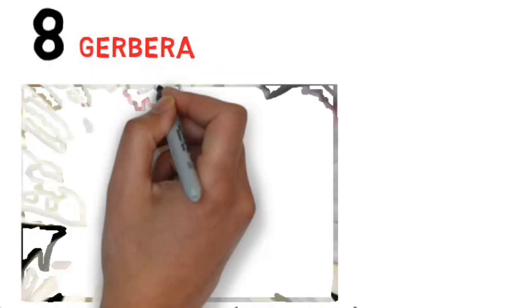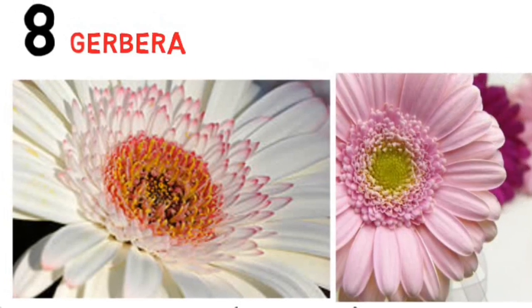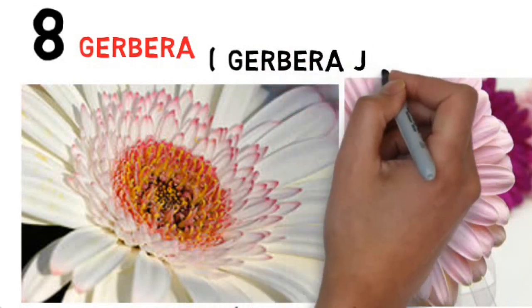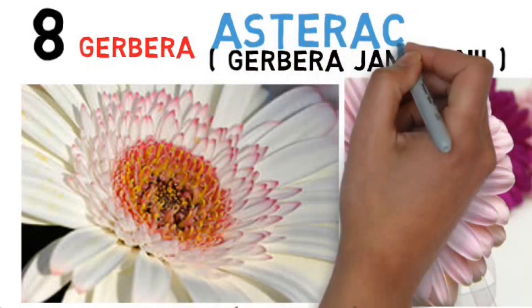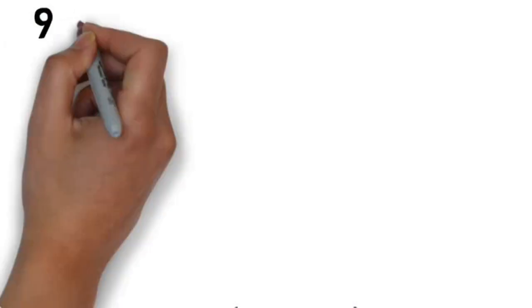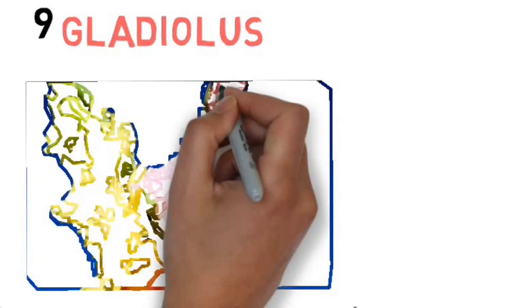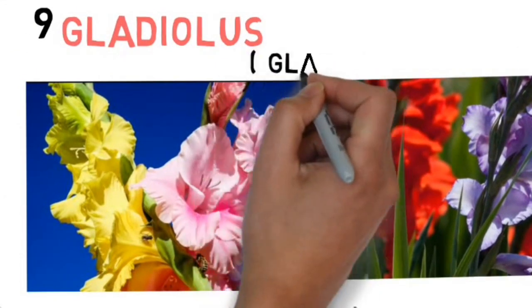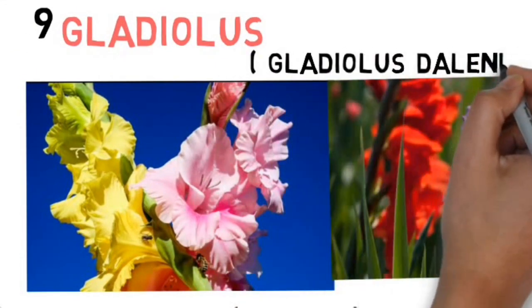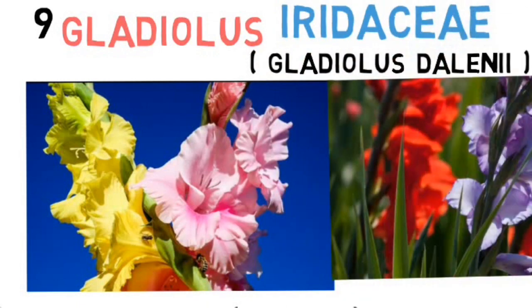Next is gerbera. Its scientific name is Gerbera jamesonii and it belongs to the family Asteraceae. Next is gladiolus. Its scientific name is Gladiolus dalenii and it belongs to the family Iridaceae.